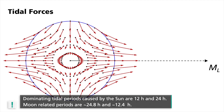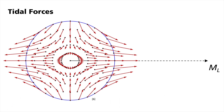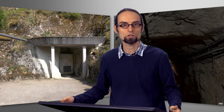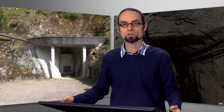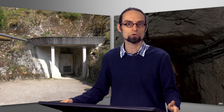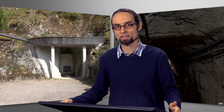Dominating tidal periods caused by the sun are 24 hours and 12 hours. Moon-related periods are somewhat longer, approximately 24.8 hours and 12.4 hours. You can observe this difference at a daily moonrise — each day it rises about 50 minutes later, and so do the tides. Besides these diurnal and semi-diurnal periods, the signal also contains long-period contributions in a variety of modulations due to the orbital motions of the moon, the earth and the planets.